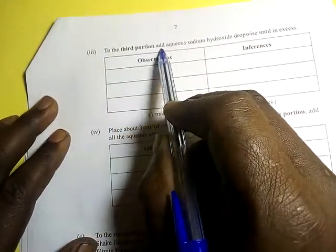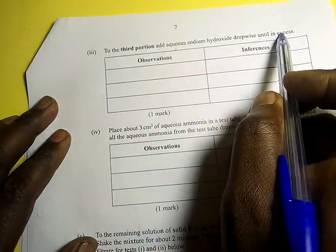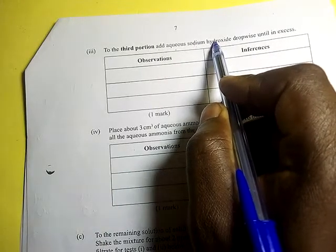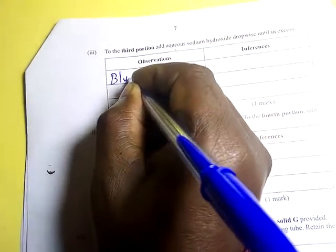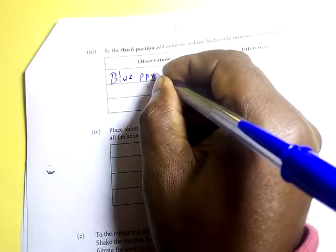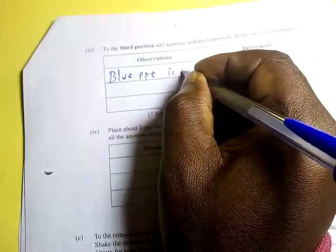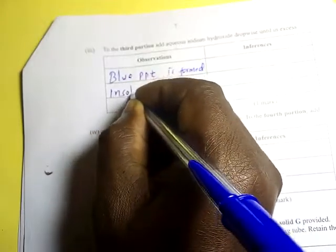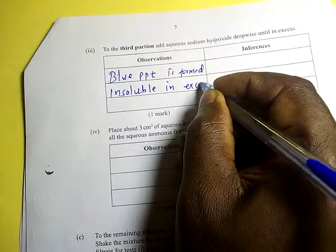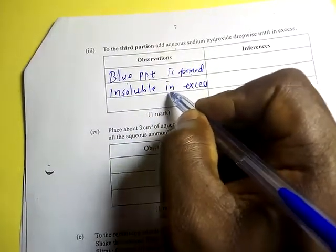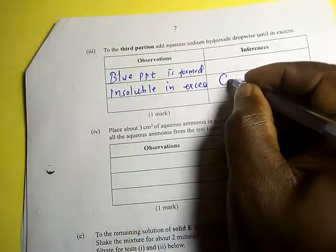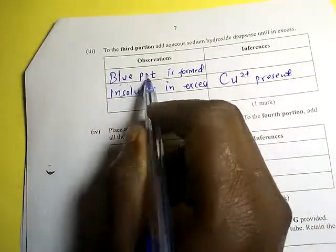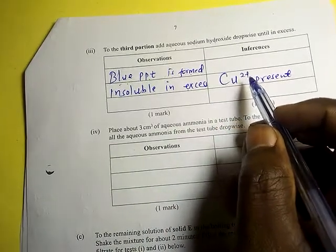To the third portion, add aqueous sodium hydroxide dropwise until in excess. The observation is that a blue PPT is formed which does not dissolve in excess sodium hydroxide. This confirms that copper two ions are present. A blue precipitate insoluble in excess NaOH is characteristic only of copper two ions.